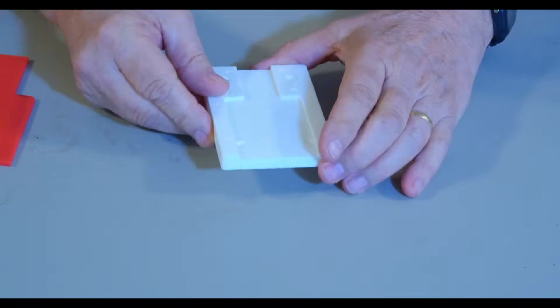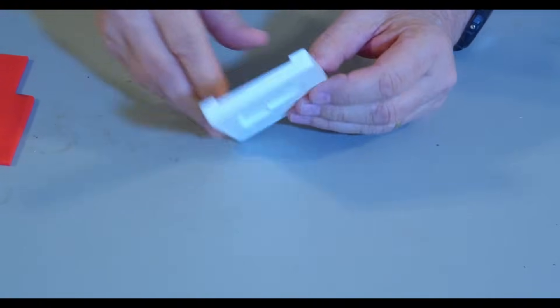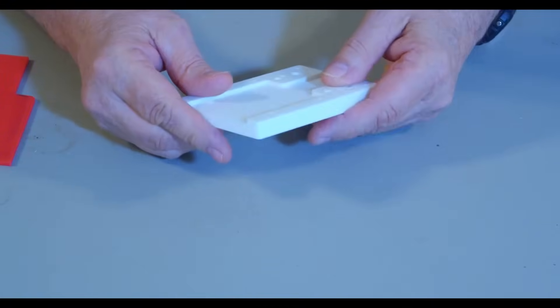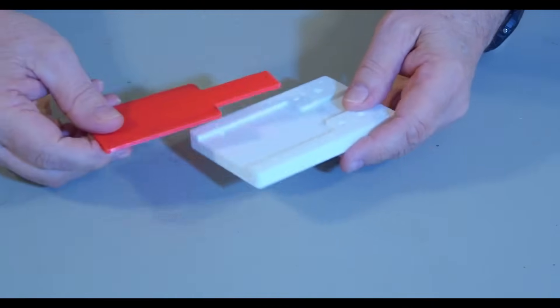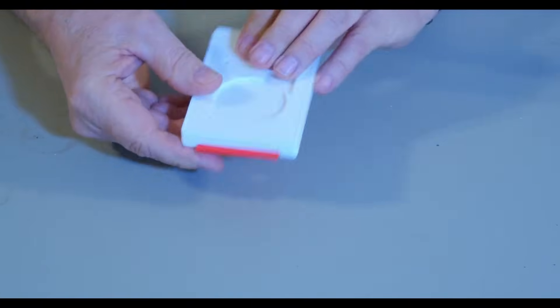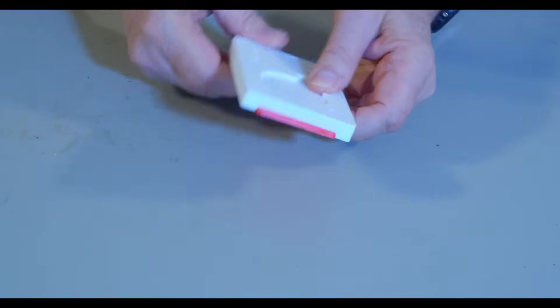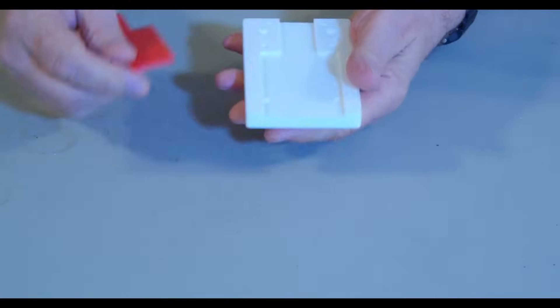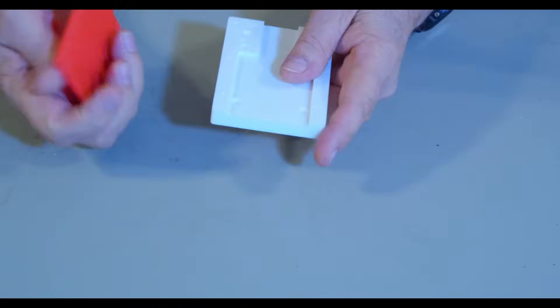If you remember in the last video, we were making this plastic part that we put recesses on both sides. We used a core in here, printed it partially, put in the core, and printed the rest of it. We have a really nice recess and it picked up the texture from the core. It works really great.